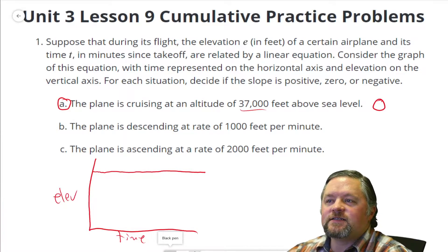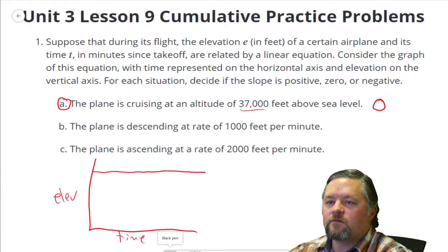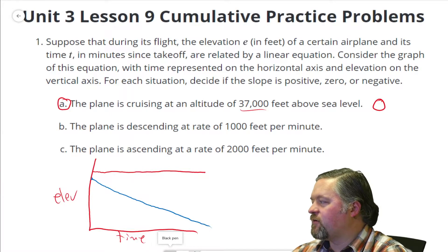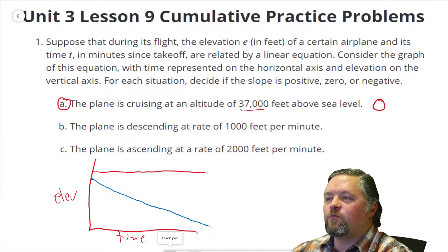The plane is descending at a rate of 1,000 feet per minute. So from whatever height we were at, it can't be zero. We can't start at zero feet off the ground if we're descending. But if we are descending at 1,000 feet per minute, we're going to be going down. That slope will be negative.